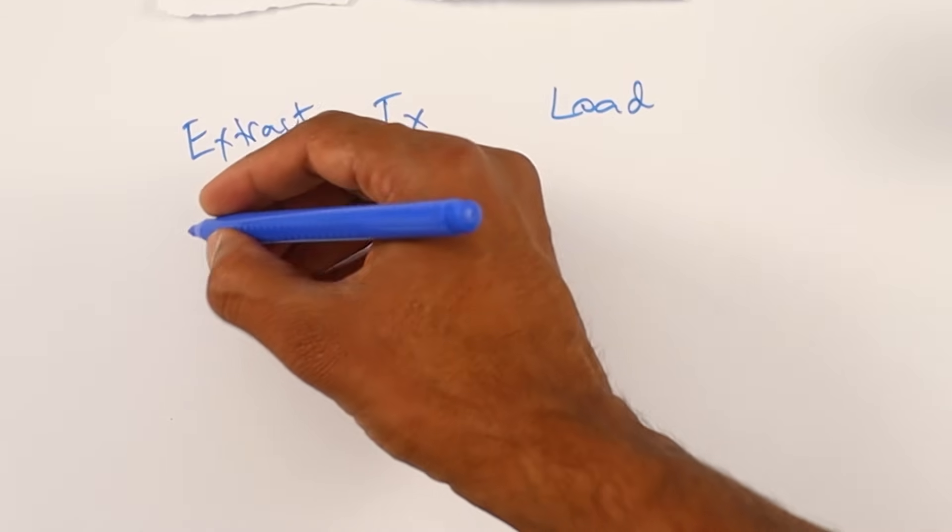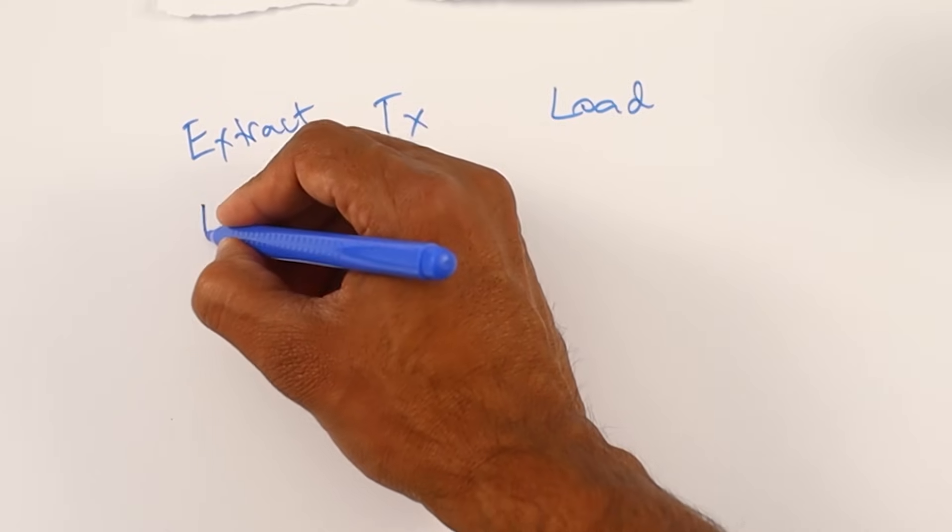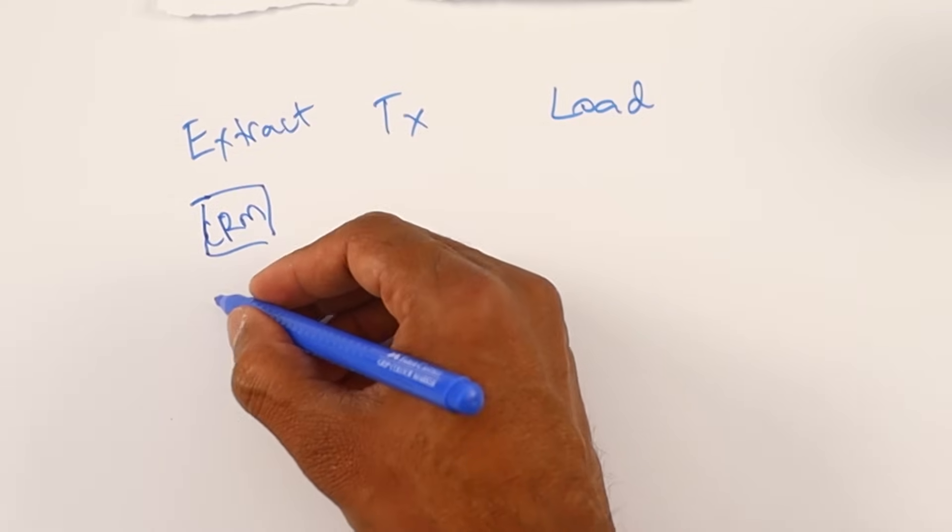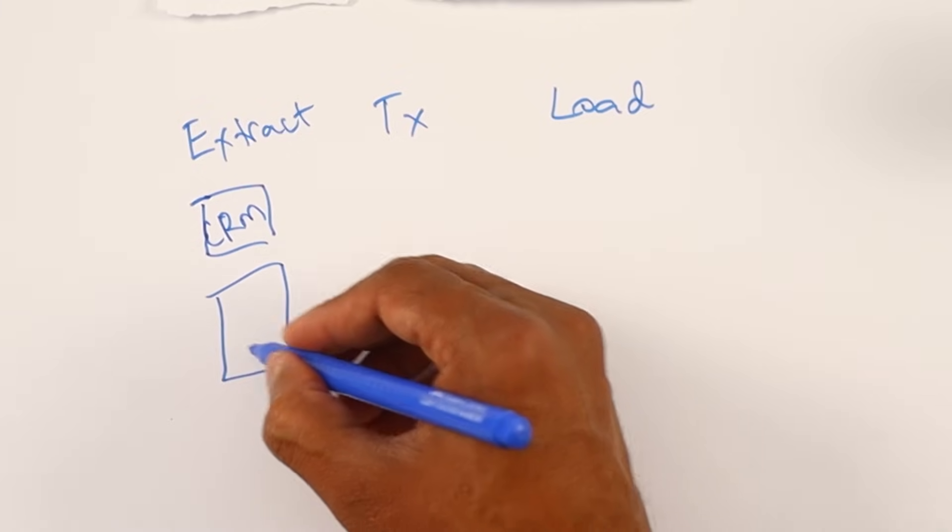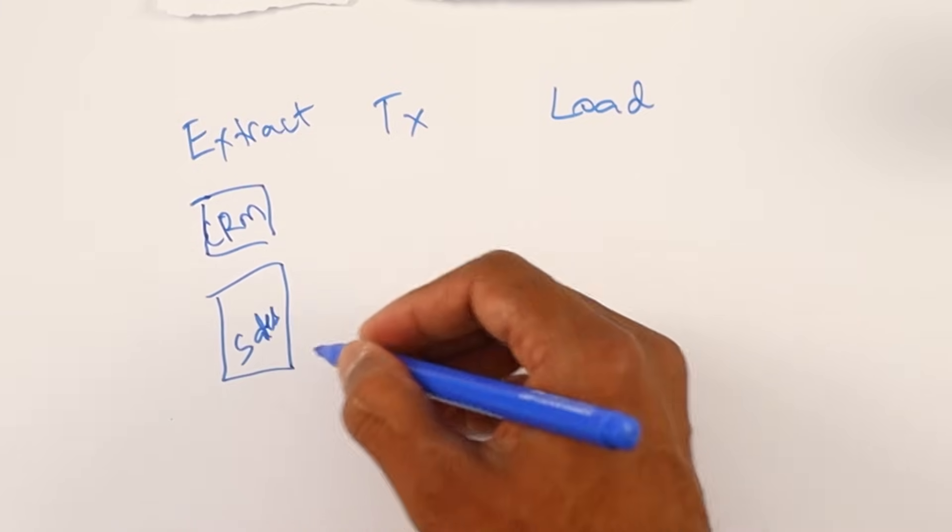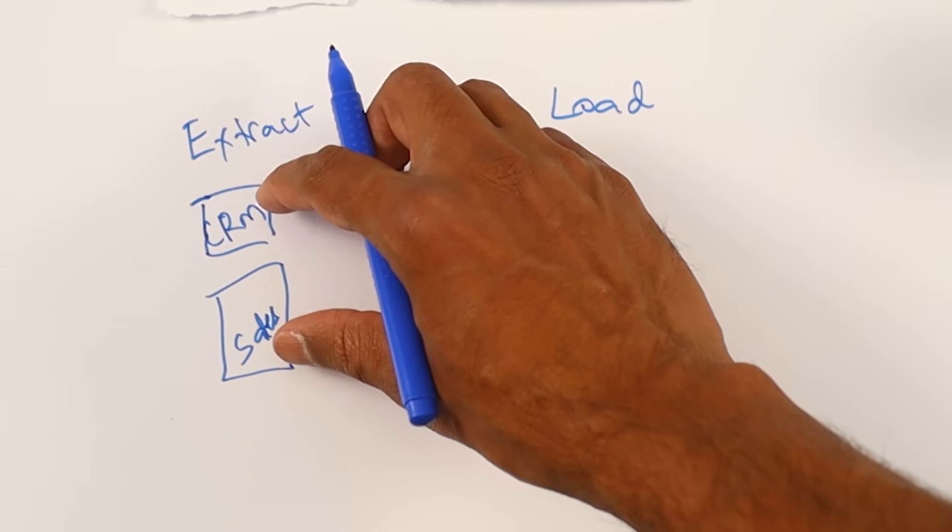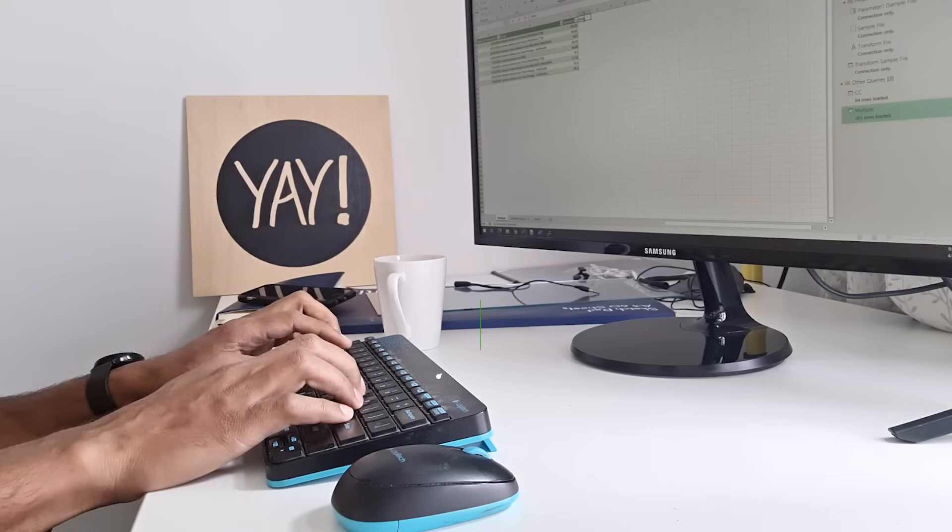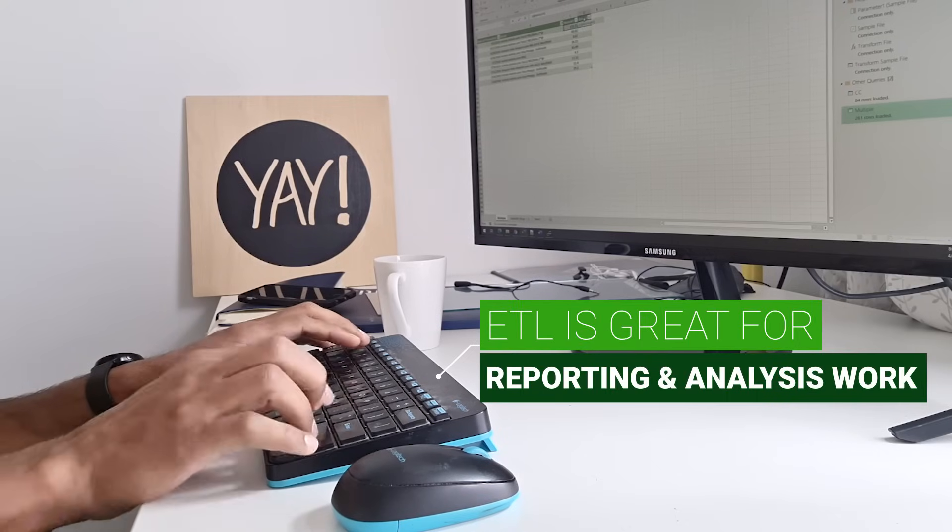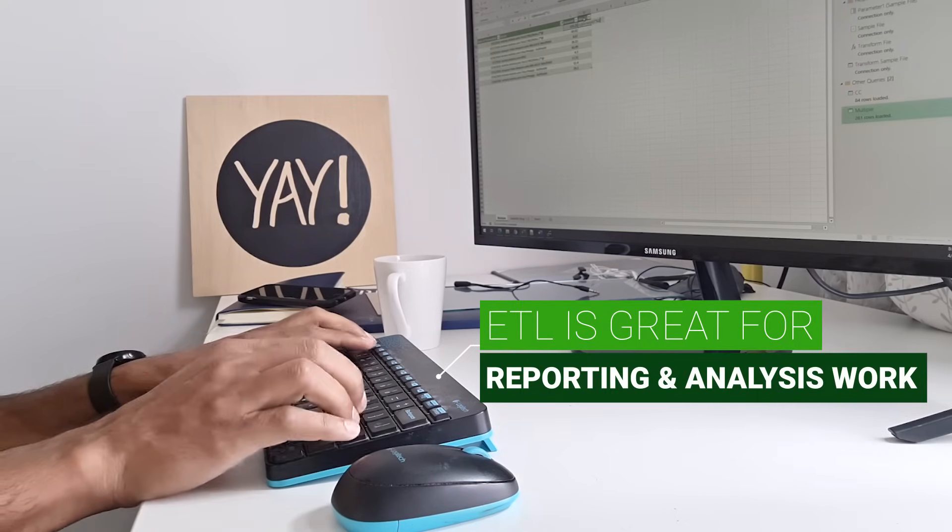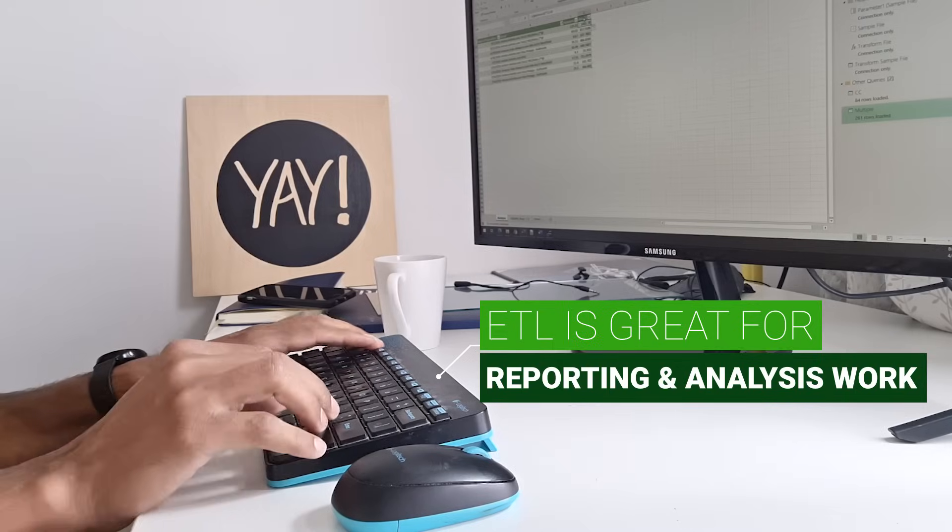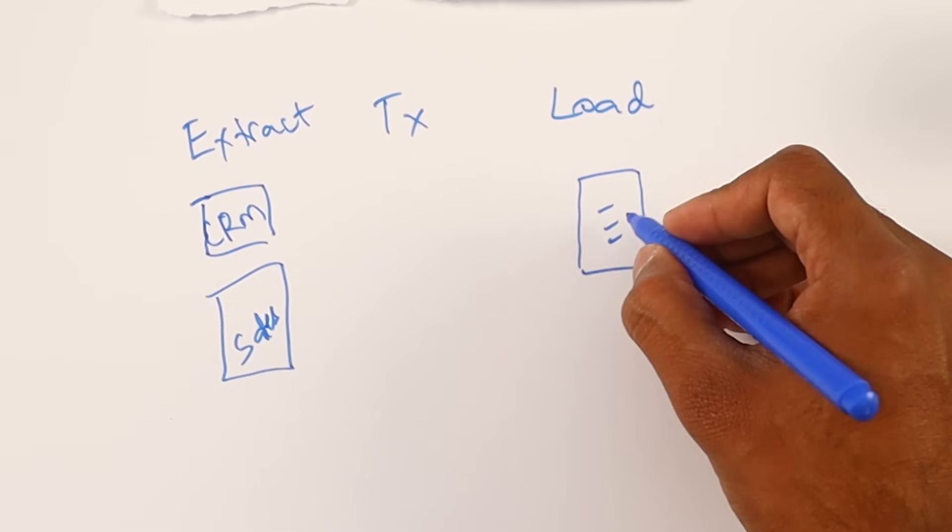For example, you may want to take some of your customer data sitting in a CRM system and then take your sales data sitting in your sales system or point of sale system, combine these two and do something so that you could generate an analysis of which customers have been purchasing from you regularly. So there's some sort of a report we need to produce.